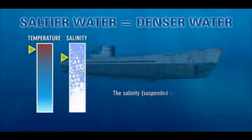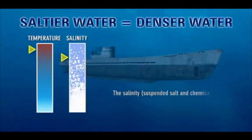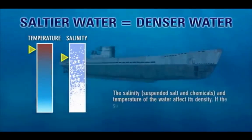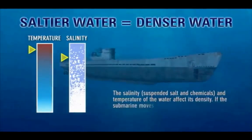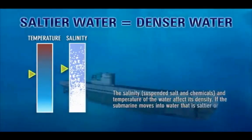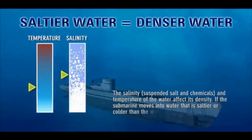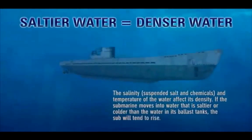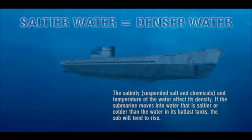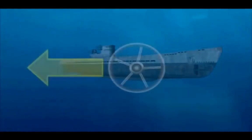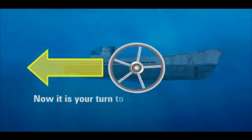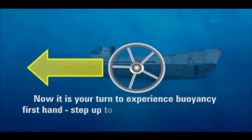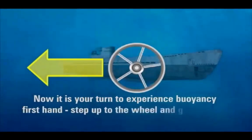The salinity, suspended salt and chemicals, and temperature of the water affect its density. If the submarine moves into water that is saltier or colder than the water in its ballast tanks, the sub will tend to rise. To maintain a steady depth, the submarine must maintain a balance of air and water in the ballast tanks equal to the density of the surrounding water.